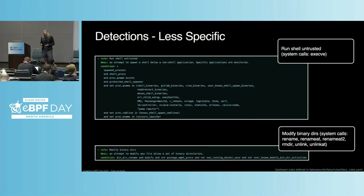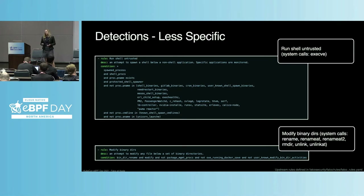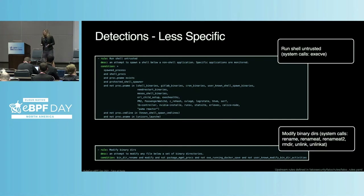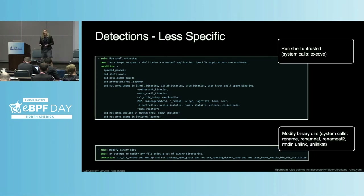A larger subset of Falco rules falls into the category of less specific. They are derived from high-level constructs that are known to be security critical — for example, spawning a shell by a non-shell application or modifying files below a set of system standard binary directories. These types of Falco rules generate a whole bunch of signals and it is hard to map them to a particular behavior. Such rules can also assist in developing new organization-specific detections. In any case, enormous work is required to analyze and triage them. This is why Falco logs are usually sent to a centralized data lake where the environment is profiled over time in order to fine-tune the rules.